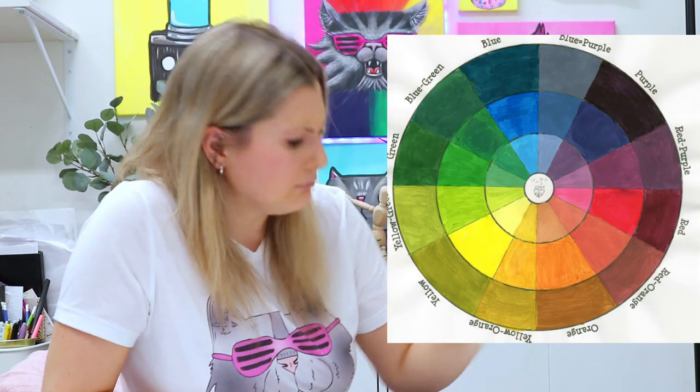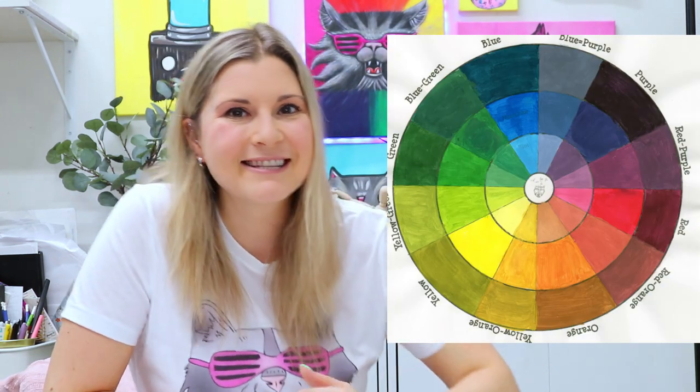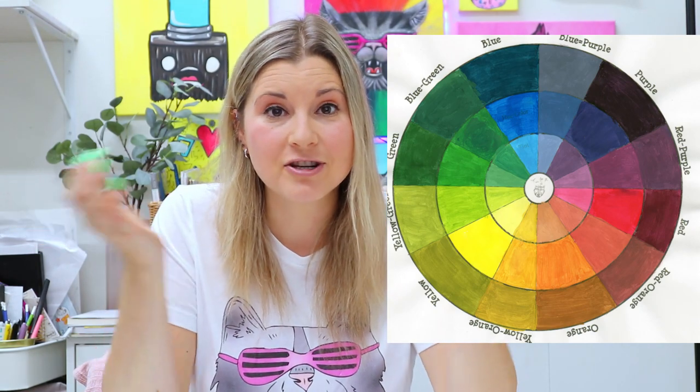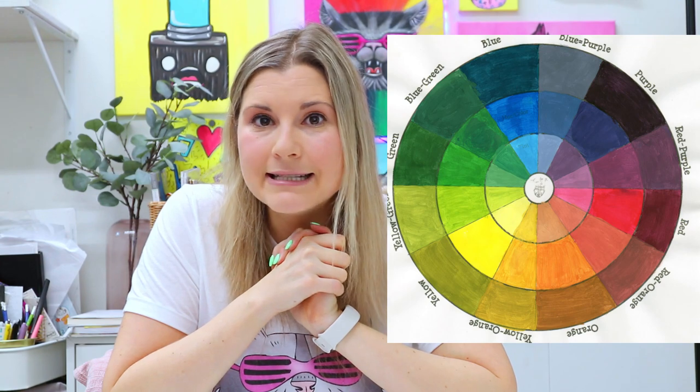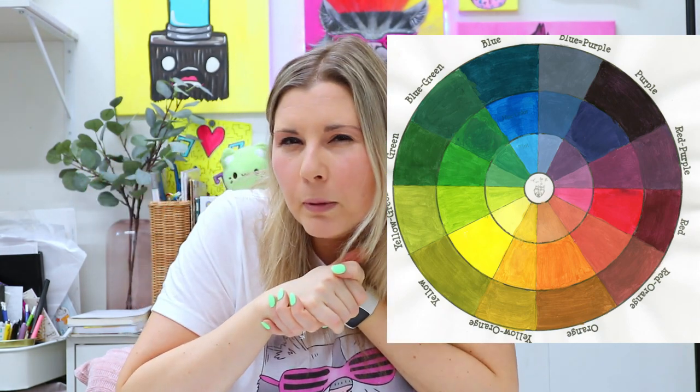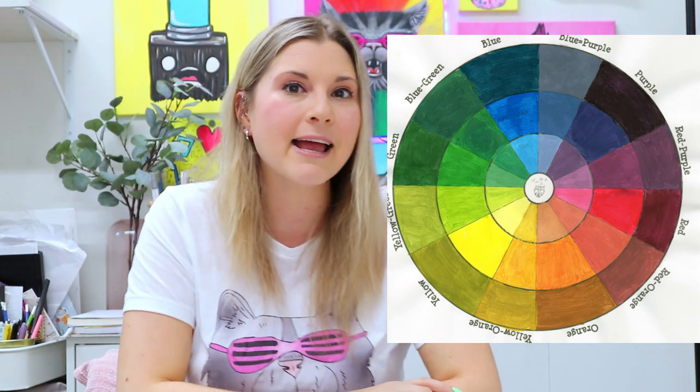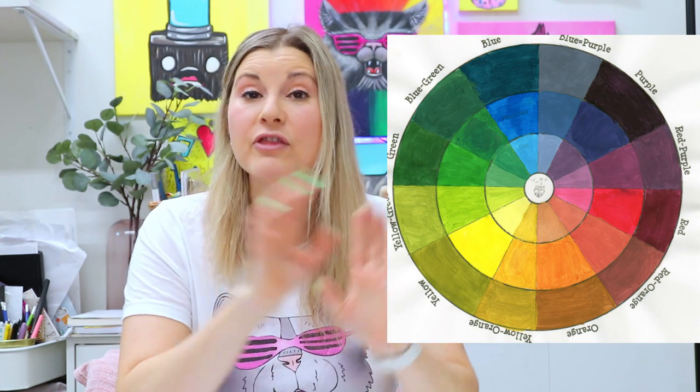We could actually mix our secondary colors and our primary colors together. And that's going to make tertiary colors. For instance, you might mix red and orange together to create red orange. Or you might mix yellow and green together to make yellow green, which would be like a brighter green than just green. You can mix blue and purple together to make a blue purple. But if you were to mix red and purple together, you would get a red purple.